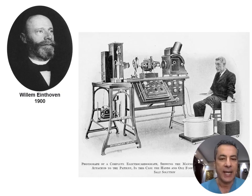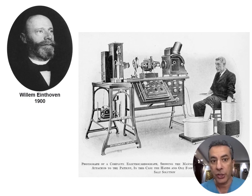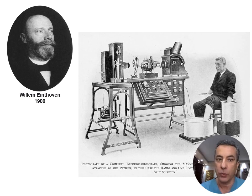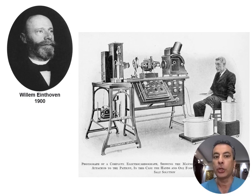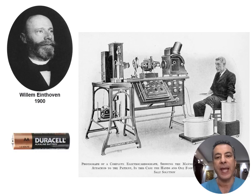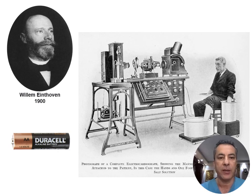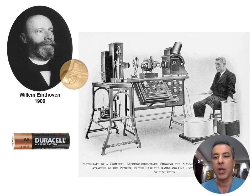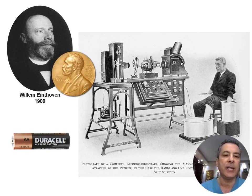The first clinical ECG machine developed by Einthoven utilized a string galvanometer, weighing more than 250 kilograms. It required five individuals to operate and had to be cooled by water, yet could detect voltages as low as a tenth of a millivolt — far less than a standard 1.5 volt AA battery. Patients were required to immerse their arms and feet in pots during the procedure. Einthoven's groundbreaking work earned him the Nobel Prize for the invention of the ECG in 1924.